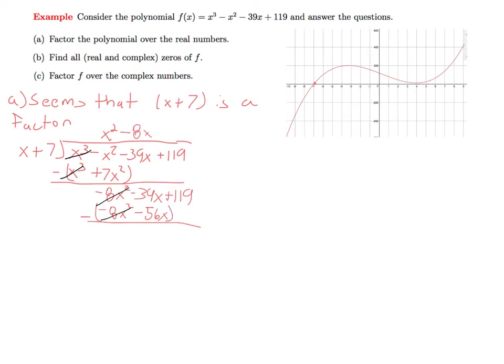What's left over is 17x plus 119. So that means I need to finally multiply by 17, and that would give us 17x plus 119.